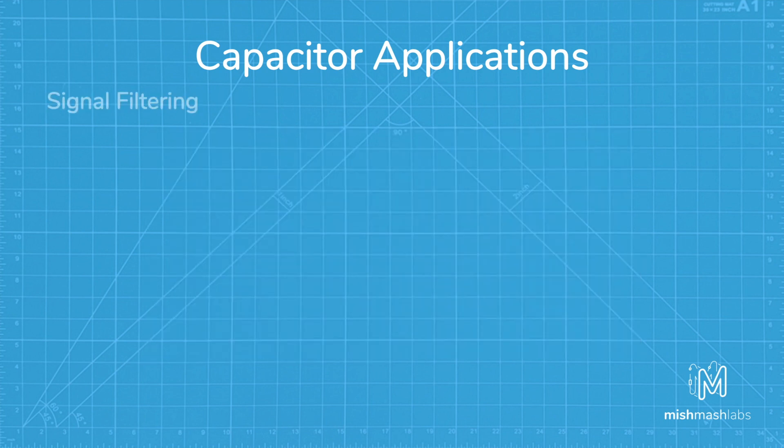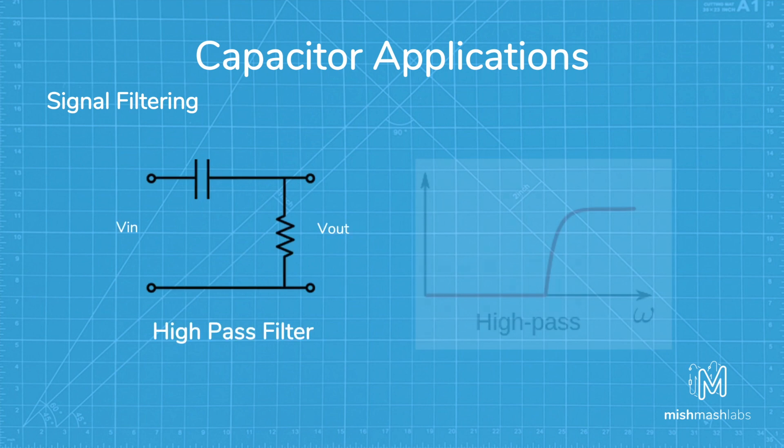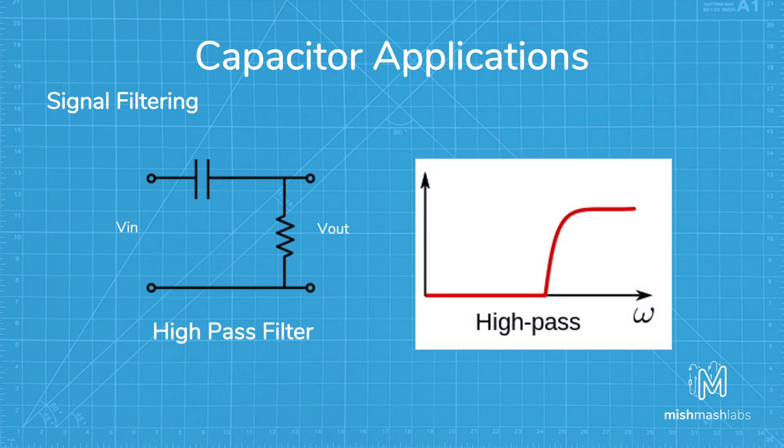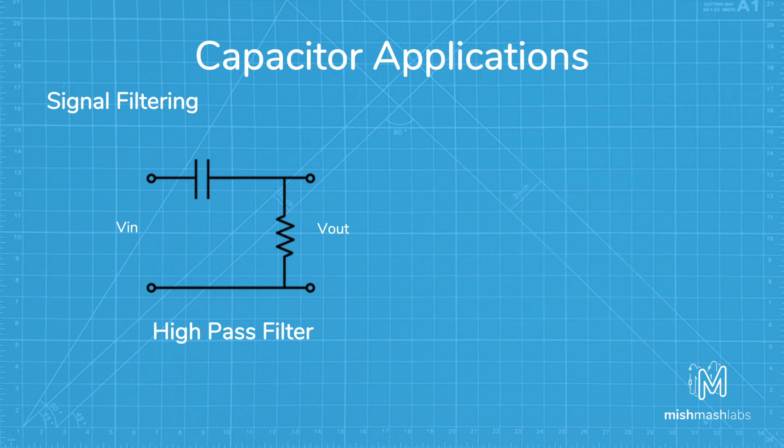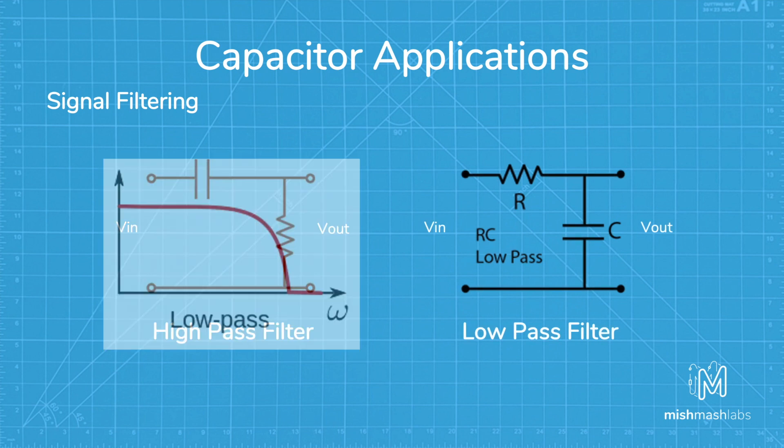Another common application for capacitors is for signal filtering. There's two common filters, a high-pass filter which allows every frequency over a certain value to pass through the filter. It's made using a resistor and a capacitor. You can specify the design frequency by changing the values of each. Similarly, if you swap the resistor and the capacitor, you create a low-pass filter, which allows signals below a specific frequency to pass through. These systems are used a lot in audio devices.